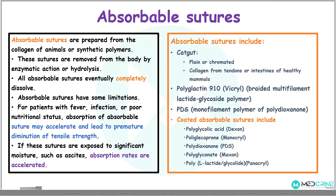If these sutures are exposed to significant moisture, for example in patients with ascites, absorption rates are accelerated. Absorbable sutures include catgut, either plain or chromium coated, polyglactin-910 (commonly known as vicryl), which is a braided multifilamentary lactate glycoside polymer, and PDS. Coated absorbable sutures include polyglycolic acid (commonly known as dexon), polyglycaprone (monocryl), polydioxanone (PDS), polyglyconate, and panacryl.